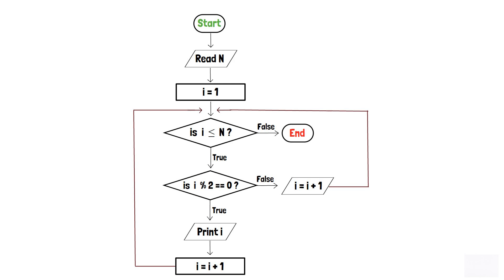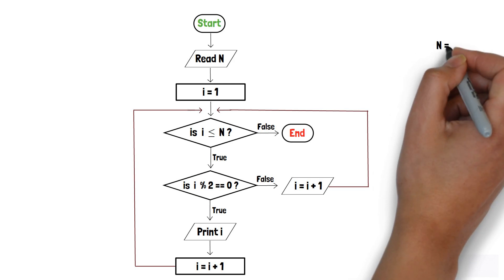So, now it's time to dry run the program to understand the actual workflow. Consider n is equals to 4.